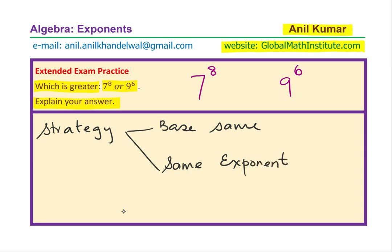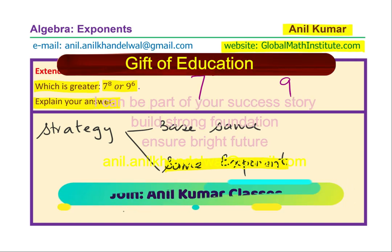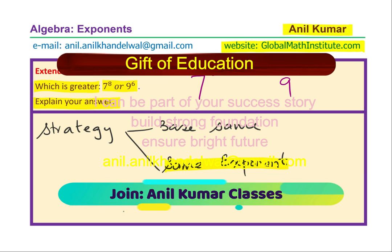Now, in this question, you will see that both the powers are even, and therefore it is easier to make the same exponents. So that is the hint. With this hint, I would like you to pause the video and answer the question.